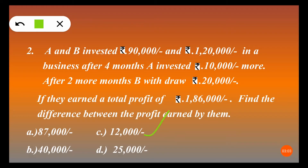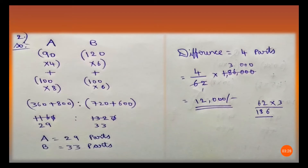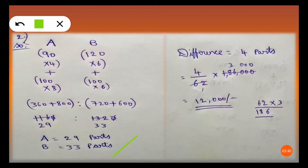Many students calculate A's profit individually and then B's profit, and subtract them — but that is a very lengthy procedure. We should not do that in computer-based examinations. Whenever a question asks for the difference between profits, we should subtract their ratios directly and calculate from there. Never find individual profits and then subtract — that approach is inefficient.